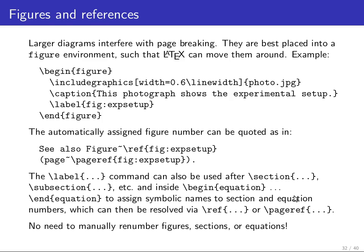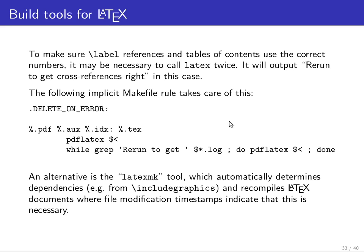TeX was designed in the 1970s when RAM was expensive. As a result, TeX is very thrifty with memory — it keeps only the current page being built and the current paragraph being formatted in memory, and at the end of each page it forgets all the text it has processed so far, carrying on only state variables that have been defined.